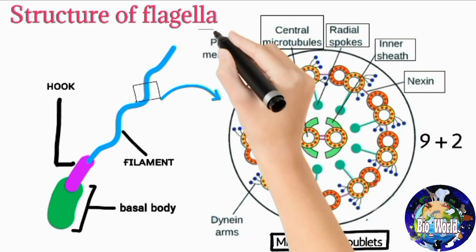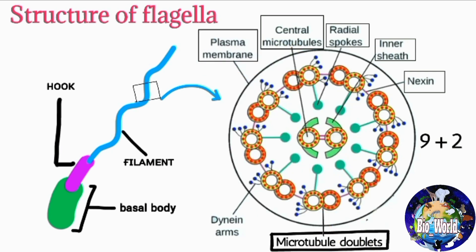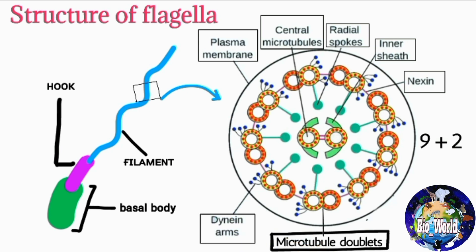Eukaryotic flagella are covered with a plasma membrane, while bacterial flagella lack a plasma membrane. Motor proteins called dynein arms are found on the tubules of the doublets, and these arms bring movement to the flagellum.